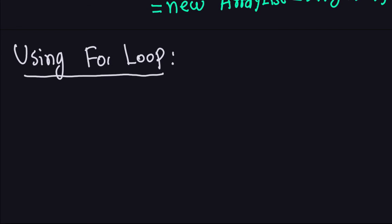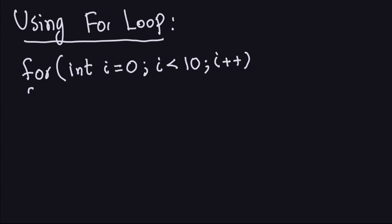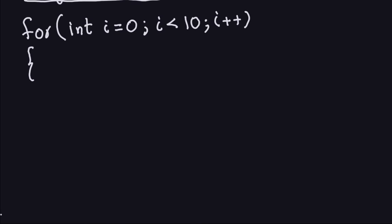You initialize the counter, make i less than 10 to create 10 numbers — zero through nine — then increment with i++. Close the parentheses, and open and close the curly braces. This is how we're going to populate that list. We want to add random integers to that list, so we use the name of our list: myList.